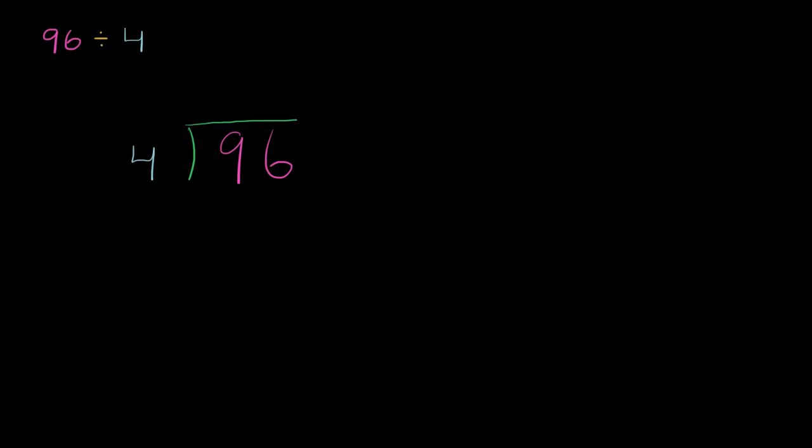So the first thing we'll do is say, how many times does 4 go into 9? Well, we know that 4 times 2 equals 8, and that 4 times 3 equals 12. So 3 would be too much. We would go above 9. We want the largest number that gets us into 9 without going over. So we'll say it goes 2 times. 4 goes into 9 two times.